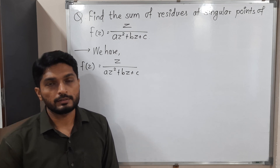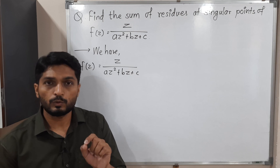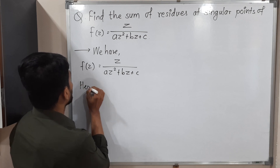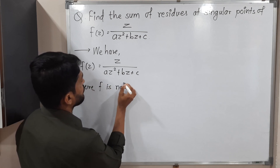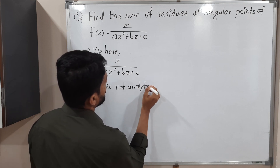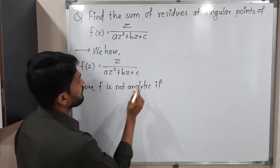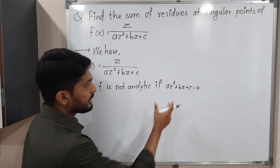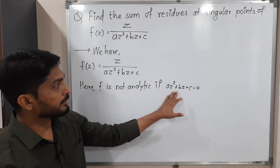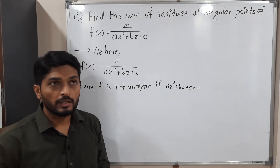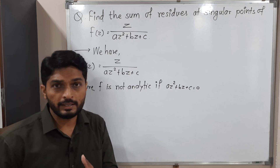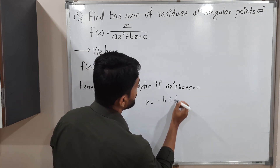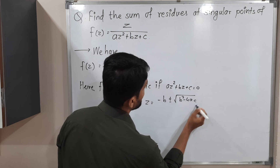So let us find the singular points. Singular points means a point where the function is not analytic, or simply where the denominator is 0. So when the denominator is 0, that means az² + bz + c = 0. This is a quadratic equation and we know how to find its roots. The formula is z = (−b ± √(b²−4ac)) / 2a.